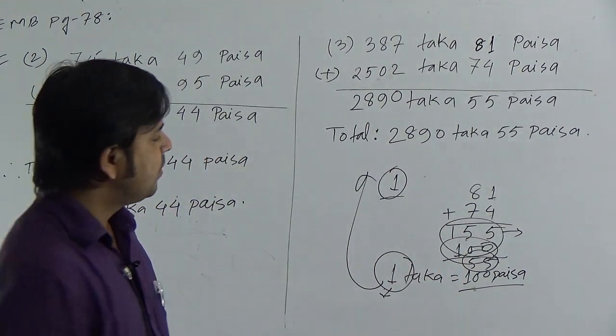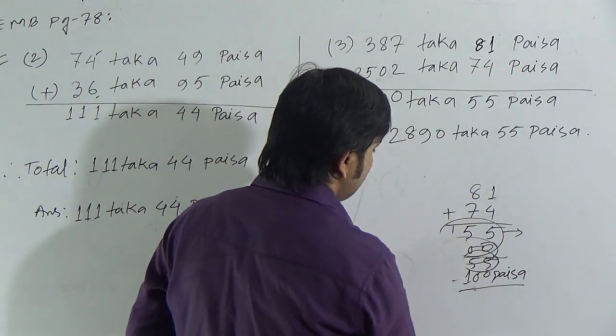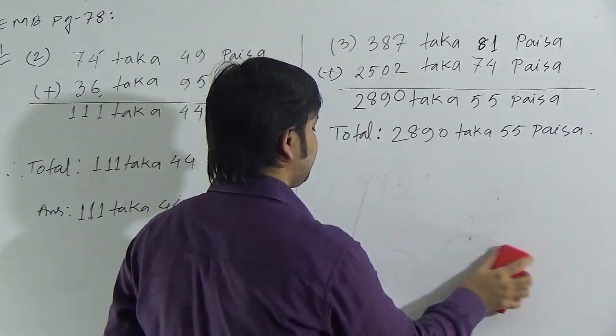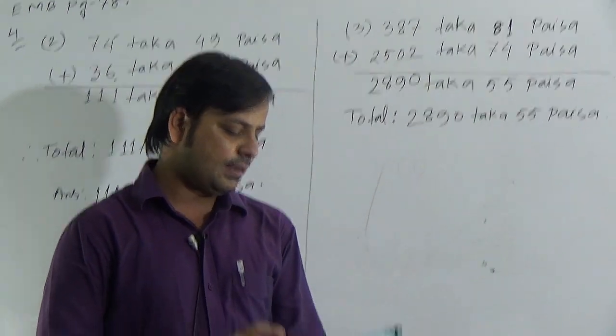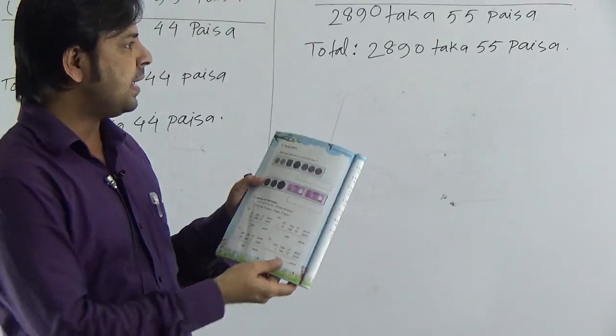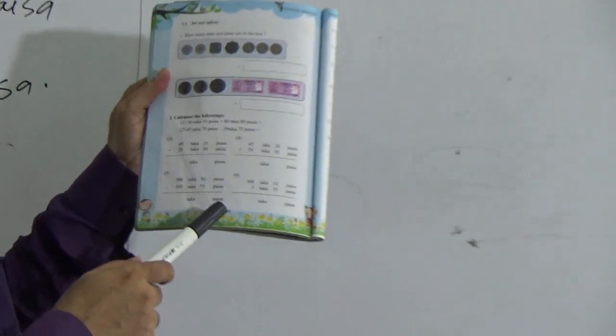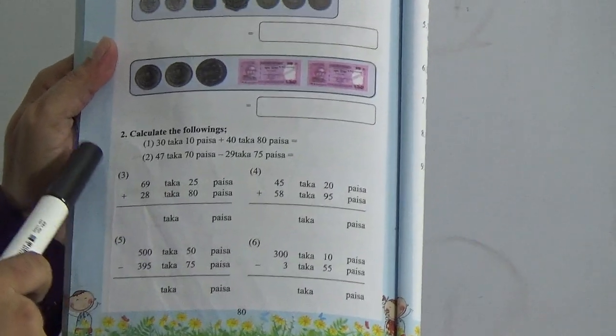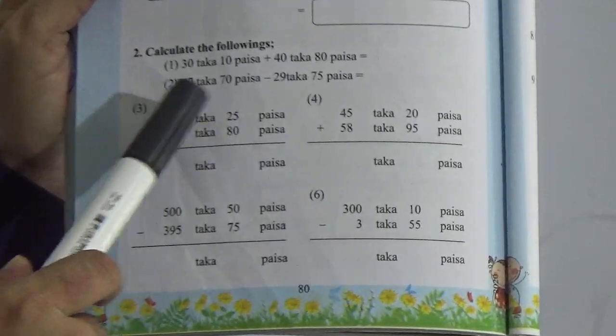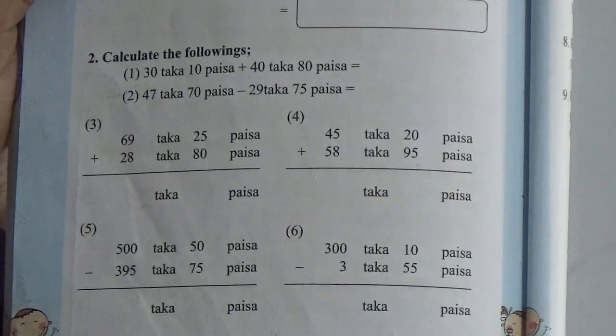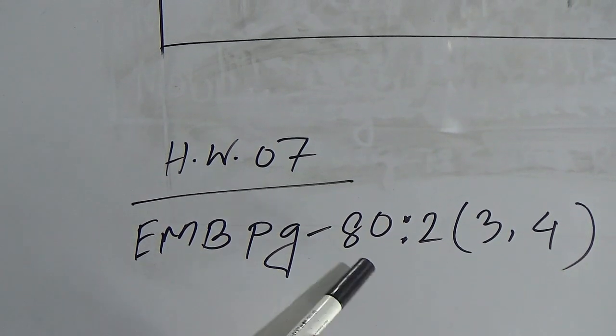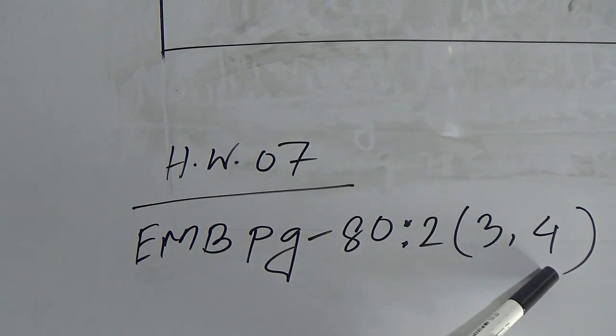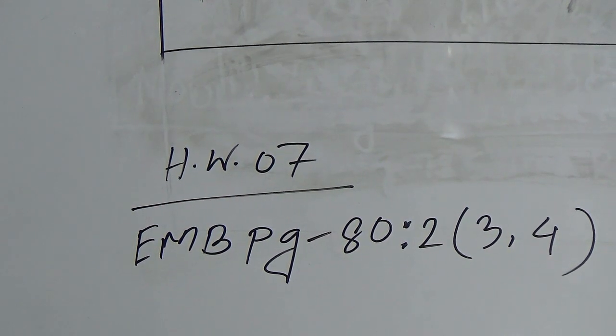Dear students, I have given 2 questions for your homework. Such type of question I have given. You can open your book at page 80 for homework. I have given from page 80, activity 2, question 3 and 4. Question 3 and 4 is given as your homework. This is your homework 7. EMB page, it means Elementary Mathematics Book page 80, activity 2, question 3 and 4. You have to do as your homework.